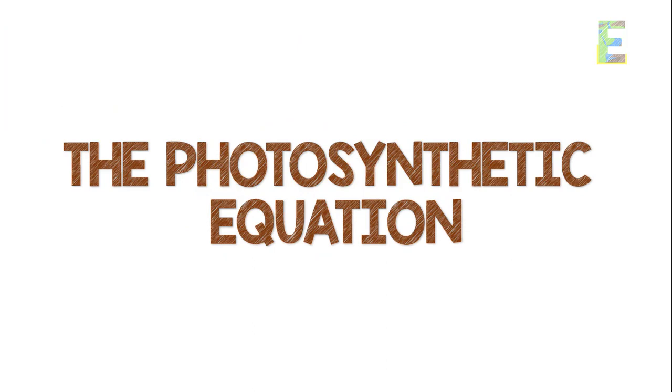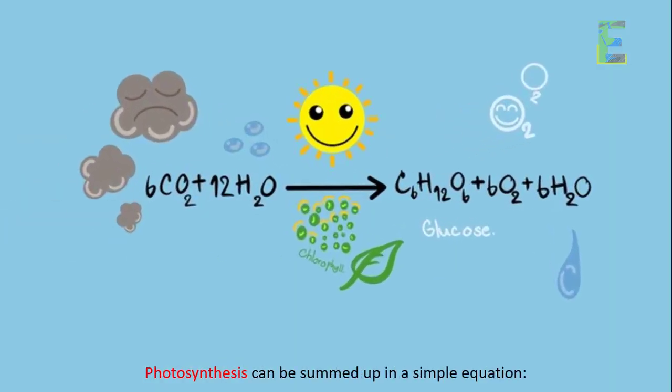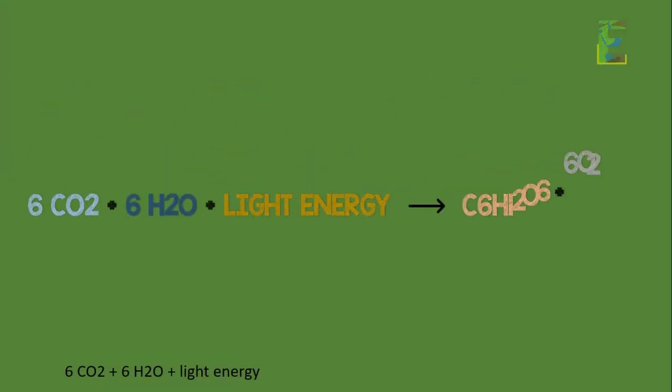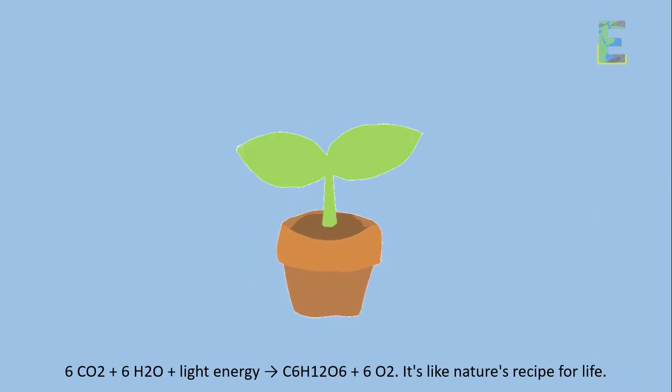The photosynthetic equation. Photosynthesis can be summed up in a simple equation: 6CO2 + 6H2O + light energy → C6H12O6 + 6O2. It's like nature's recipe for life.